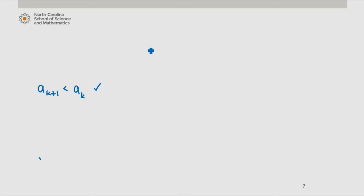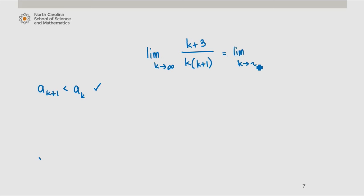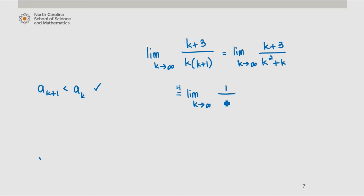For the second condition, we compute the limit as k approaches infinity of the general term a sub k, which equals the limit as k approaches infinity of k plus 3 divided by k squared plus k. We have a few approaches — for example, L'Hôpital's rule, since both numerator and denominator approach infinity. We find that this limit is 0, so the second condition is satisfied. Therefore, the series converges by the alternating series test since both conditions are satisfied.